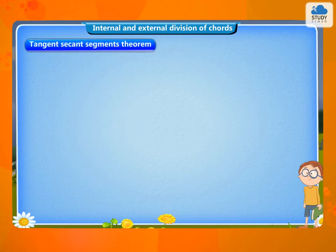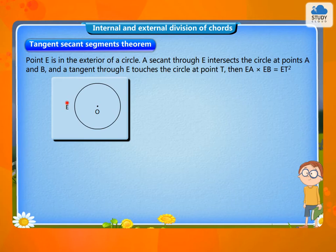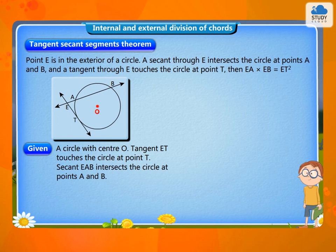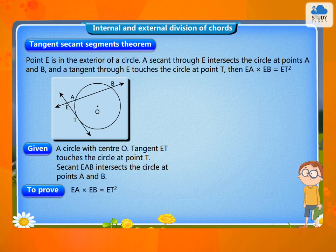Tangent-secant segments theorem: Point E is in the exterior of a circle. A secant through E intersects the circle at points A and B, and a tangent through E touches the circle at point T, then EA × EB = ET². Given: a circle with center O; tangent ET touches the circle at point T; secant EAB intersects the circle at points A and B. To prove: EA × EB = ET².